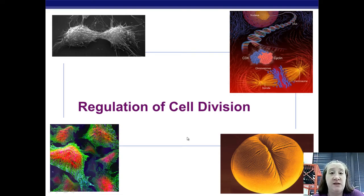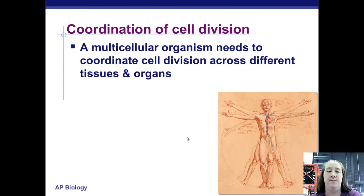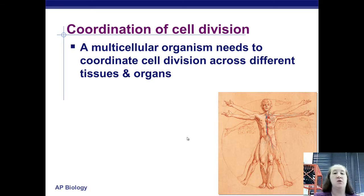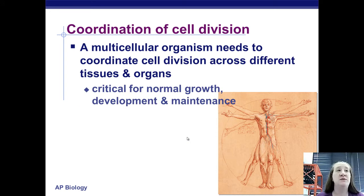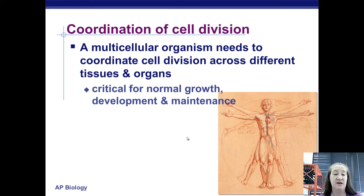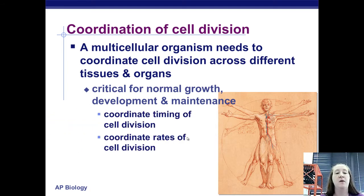Now that we've talked about mitosis and the entire cell cycle, we want to figure out how does a cell know when it's time to divide and when it's time not to divide. So how is the cell cycle regulated? You are an enormous multicellular organism. You have billions of cells organized into tissues and organs, and the whole body has to coordinate when cells divide to make sure everything works properly. It's important that your cells know when to divide for normal growth, development, and maintenance. If cell division stopped, any cut would never heal because you'd never grow new cells to close it.